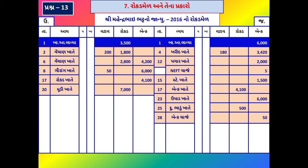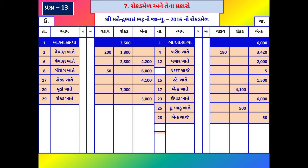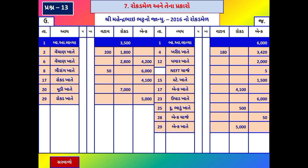ત્યારબાદ તારીખ 29 વ્યવાર: રૂ. 5,000 બેંકમાં ભર્યા. અને છઠ્ઠા ખર્ચ વ્યવારો. આ વ્યવારો નોંધ્યા. વિગત: 'બેંક ખાતે'; અને રોકડ ખાનામાં નોંધ.